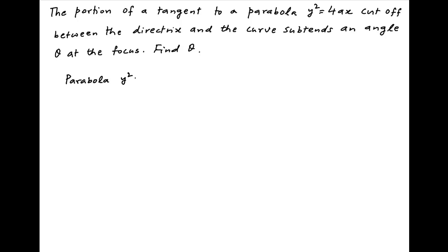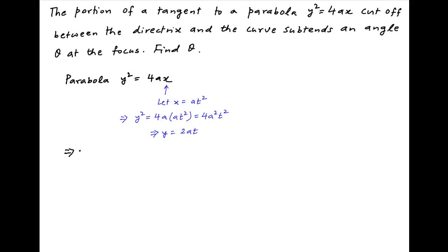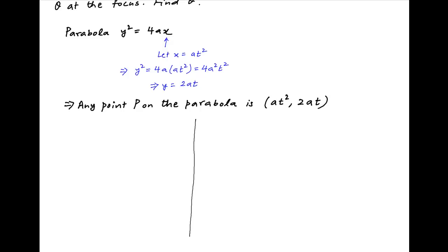We start by obtaining any general point on the given parabola y² = 4ax. If we put x = at², then y² = 4a·(at²) = 4a²t², and therefore y = 2at. Therefore, the parametric form of the coordinates of any general point P on the given parabola is (at², 2at).